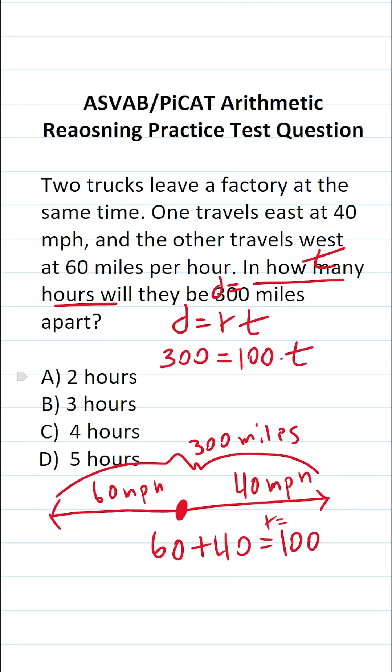To solve for t, we divide both sides by 100. This crosses out, leaving us with t. 300 divided by 100 is 3. So it's going to take them 3 hours to be 300 miles apart.